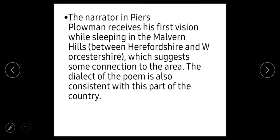The narrator in Piers Plowman receives his first vision while sleeping in the Malvern Hills. The narrator's first vision begins while he was sleeping in the Malvern Hills, between Herefordshire and Worcestershire, which suggests some connection to that area. The dialect of the poem is also consistent with this part of the country, connecting the narrator's first vision to Herefordshire and Worcestershire.